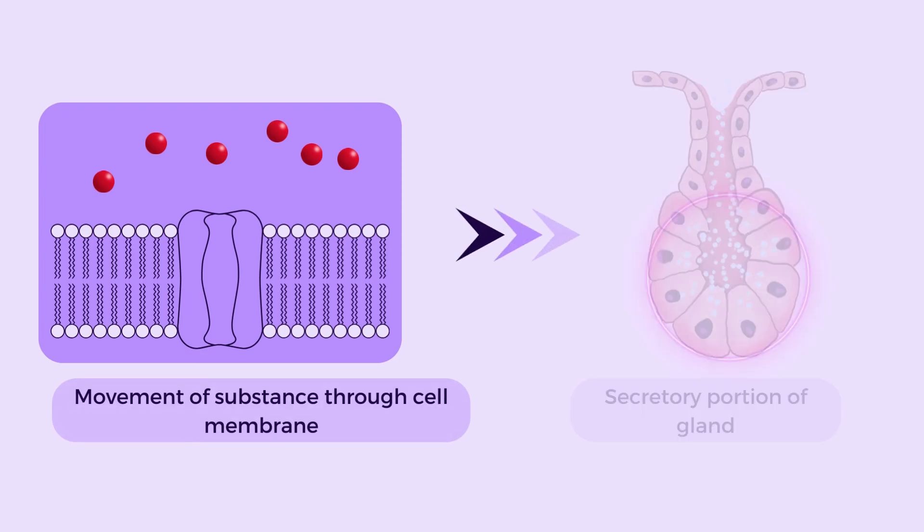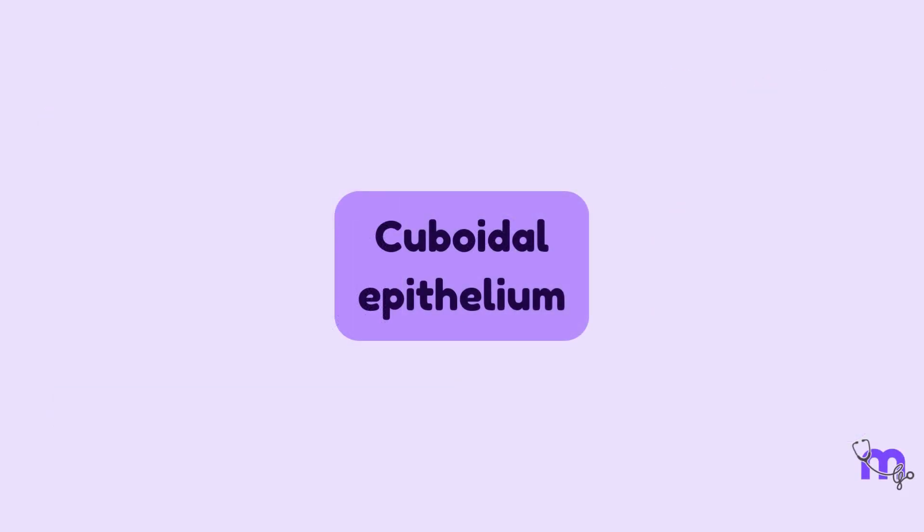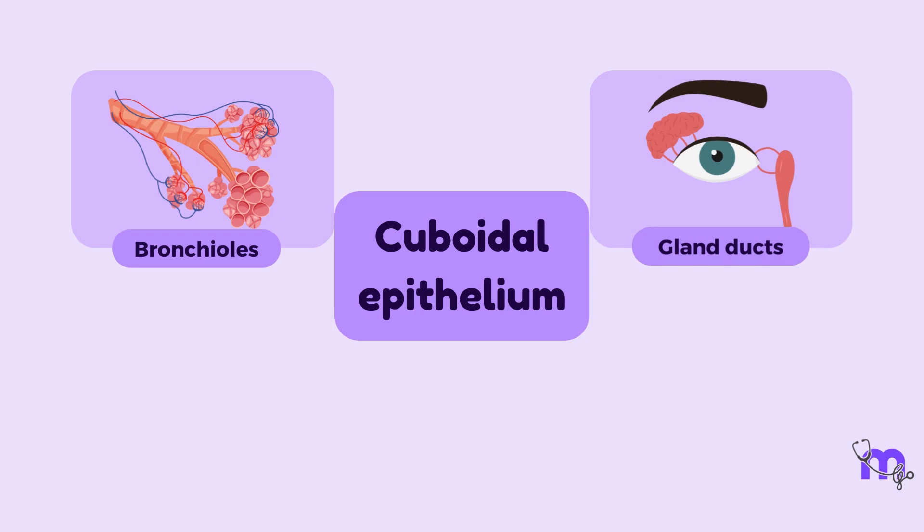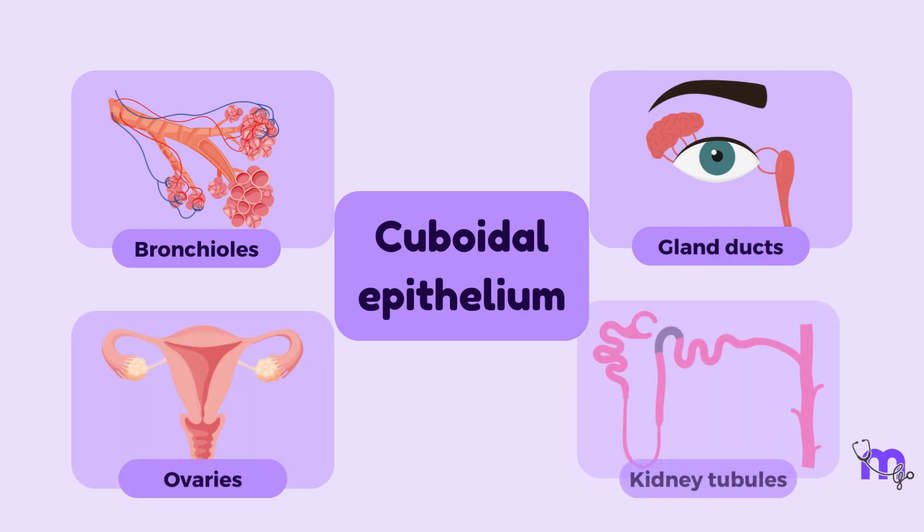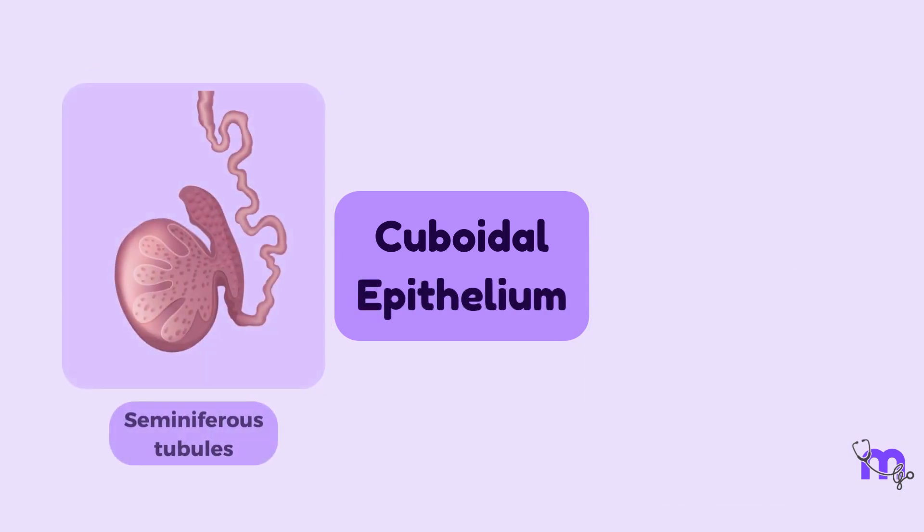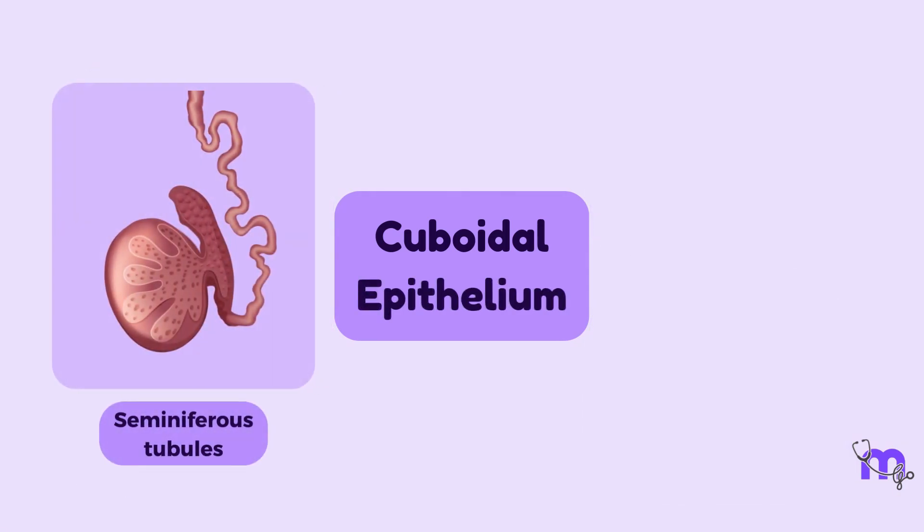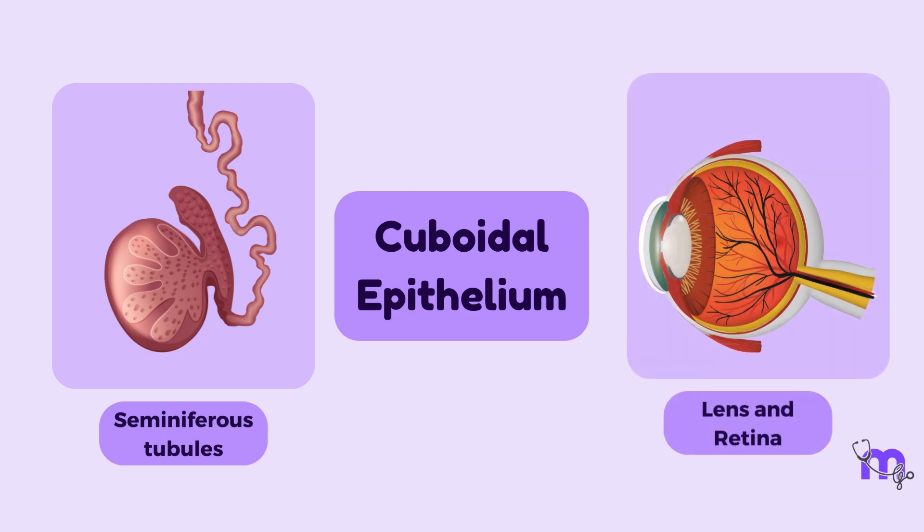The simple cuboidal epithelium is mostly involved in actively moving substances across membranes and hence forms the secretory portions of glands. They can be very widely distributed in all systems of the body like the lining of the bronchioles, the ducts of glands, the germinal epithelium of the ovaries, the convoluted tubules of the kidneys, lining the seminiferous tubules of the testes, and also lining of the lens and retina of the eyes.